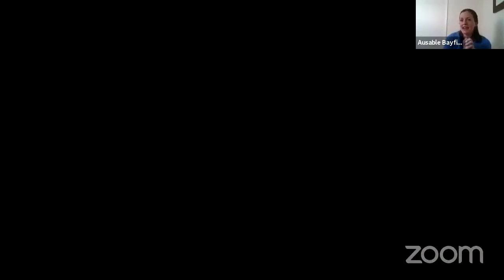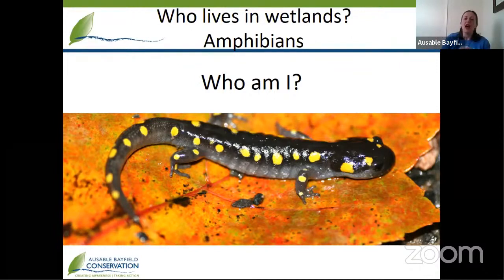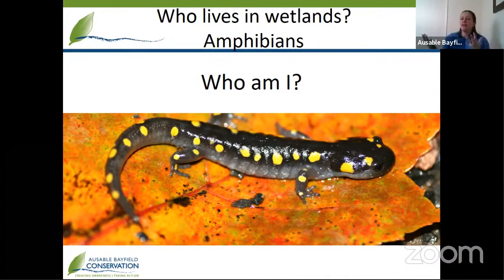Our next animal is an amphibian. How do amphibians and reptiles differ? Reptiles tend to have dry, scaly skin, and even turtles, which spend most of their time in the water, lay their eggs on land. Our amphibian friends, you can even tell by this picture, have smooth, wet skin — they might even be a little bit slimy if you were to pick them up. That's because they actually breathe through their skin, which is really cool. And they will lay their eggs in the water and spend part of their early life in the water.